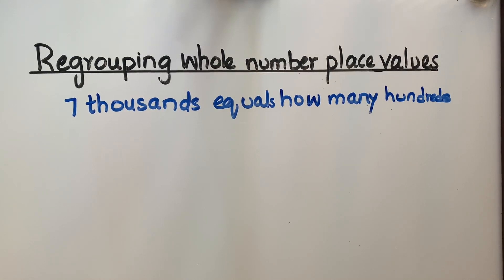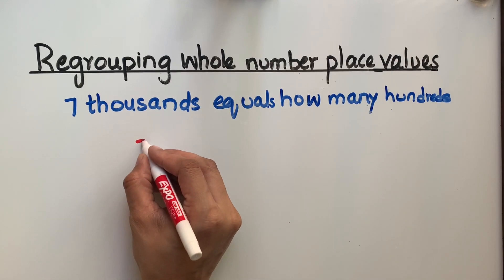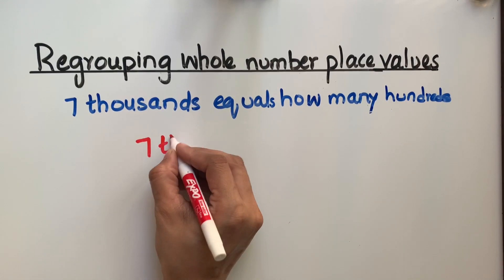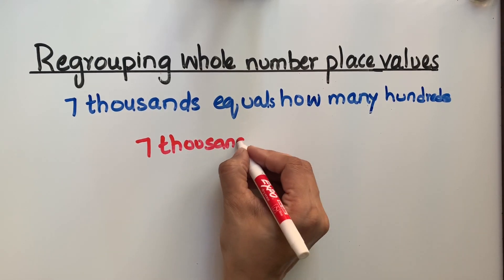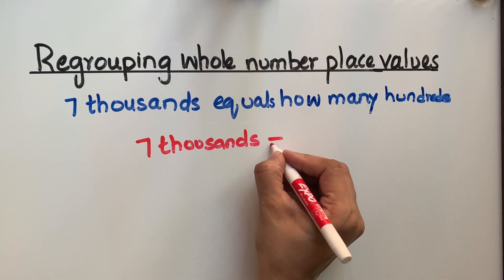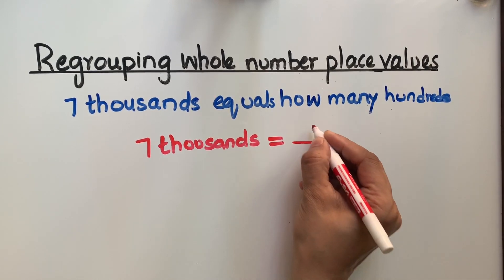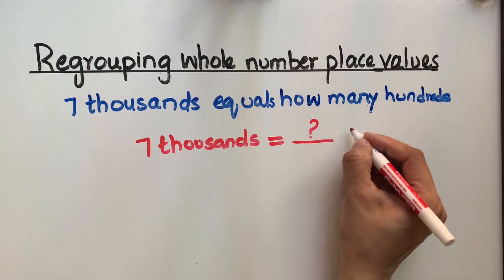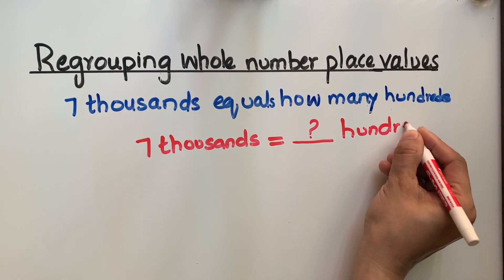Regrouping whole number place values. The question is: seven thousands equals how many hundreds? Before getting to this question, let me make an equation. Seven thousand equals how many hundreds? This is what we have to find out.